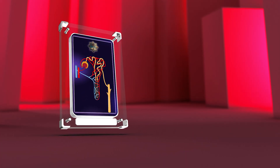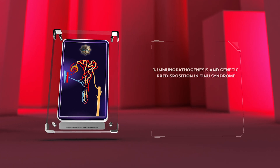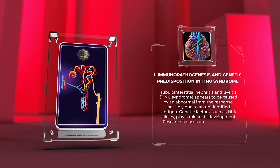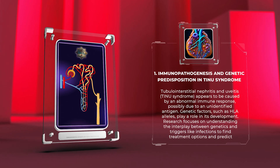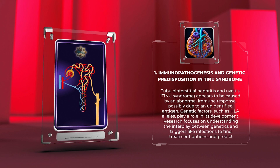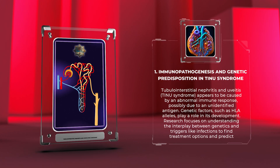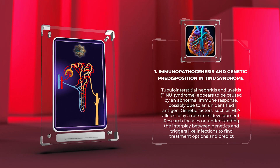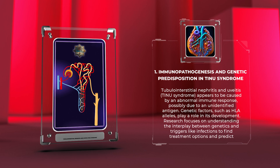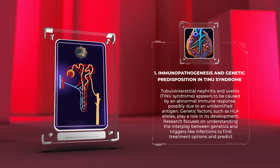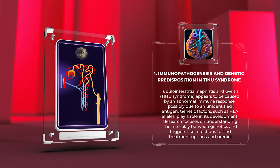Tubulointerstitial nephritis and uveitis appears to be caused by an abnormal immune response, possibly due to an unidentified antigen. Genetic factors, such as HLA alleles, play a role in its development. Research focuses on understanding the interplay between genetics and triggers like infections to find treatment options and predict outcomes.